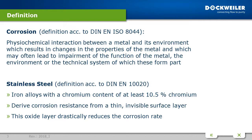Corrosion is defined according to DIN EN ISO 8044 as a physiochemical interaction between a metal and its environment which results in changes in the properties of the metal, and which may often lead to impairment of the function of the metal, the environment, or the whole technical system of which these form a part.